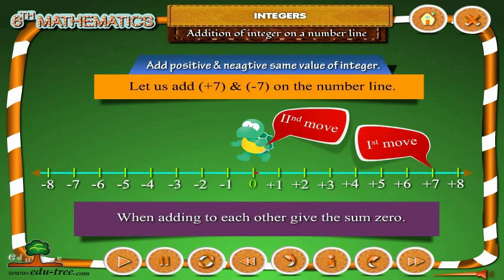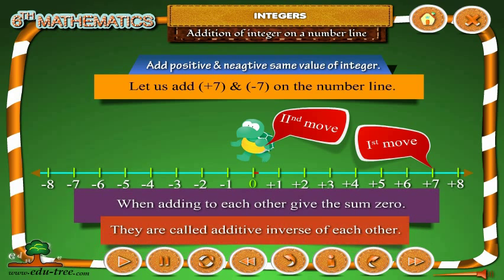When two integers add to give a sum of 0, they are called additive inverses of each other.